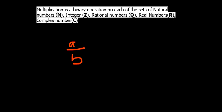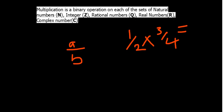Multiplication is a binary operation on each of the sets of natural numbers, integers, rational numbers, real numbers, and complex numbers. Rational numbers are numbers that can be expressed in the form A over B — a fraction. Multiplication is indeed a binary operation on such numbers because all the results you get can still be expressed in that fractional form.